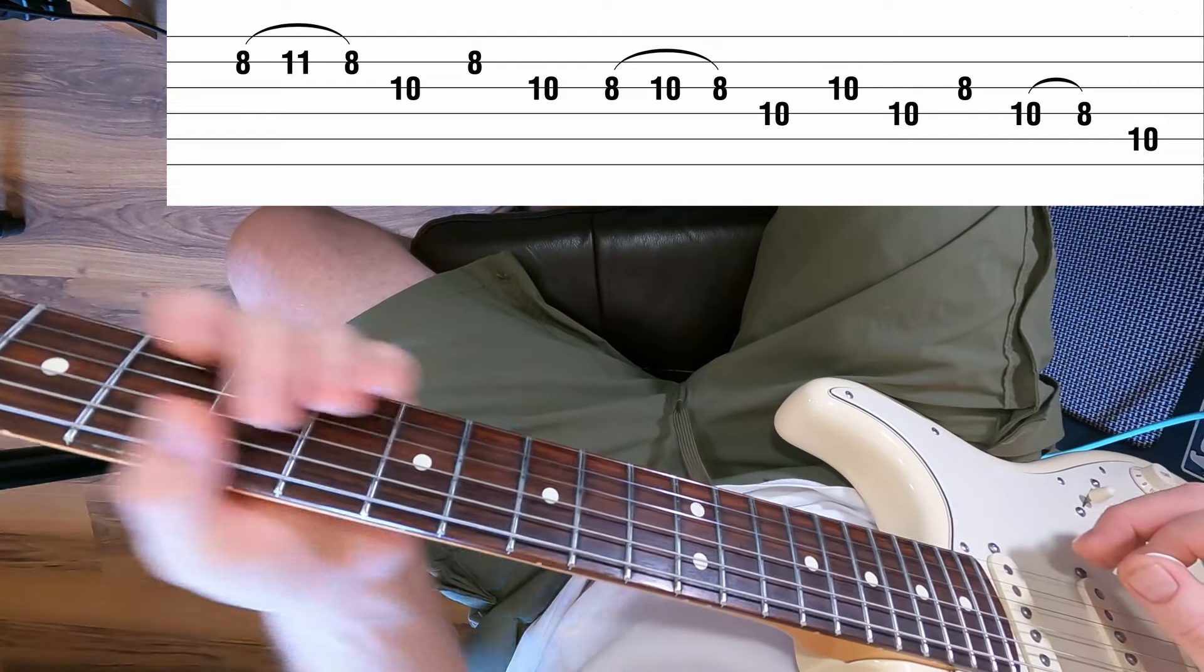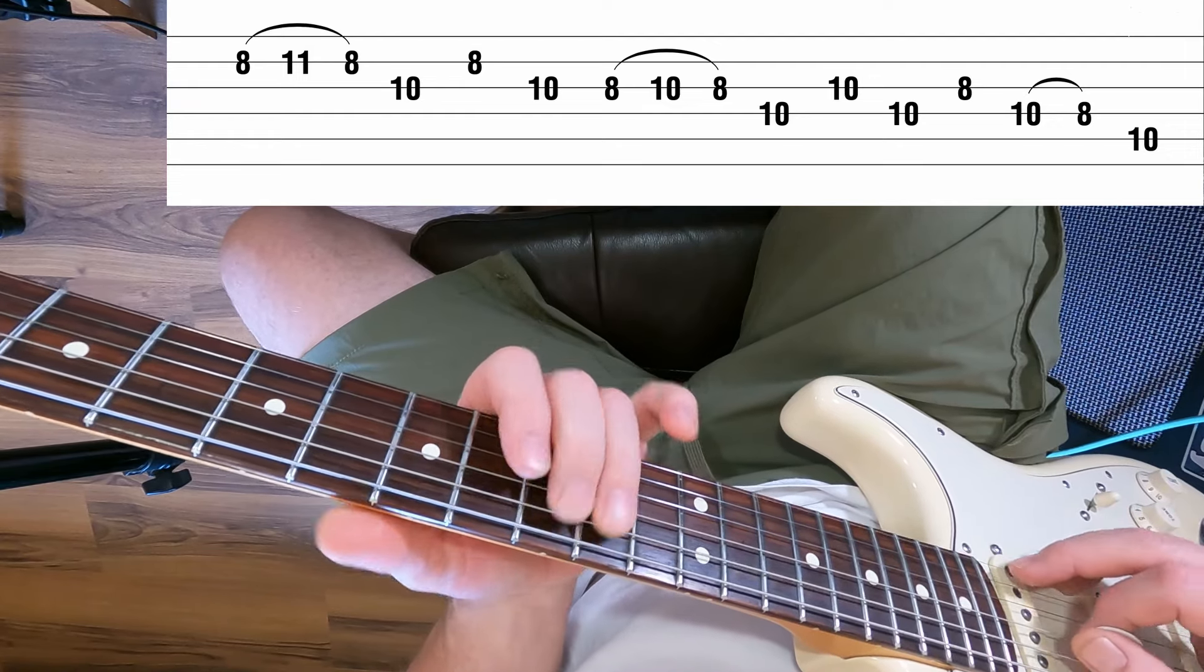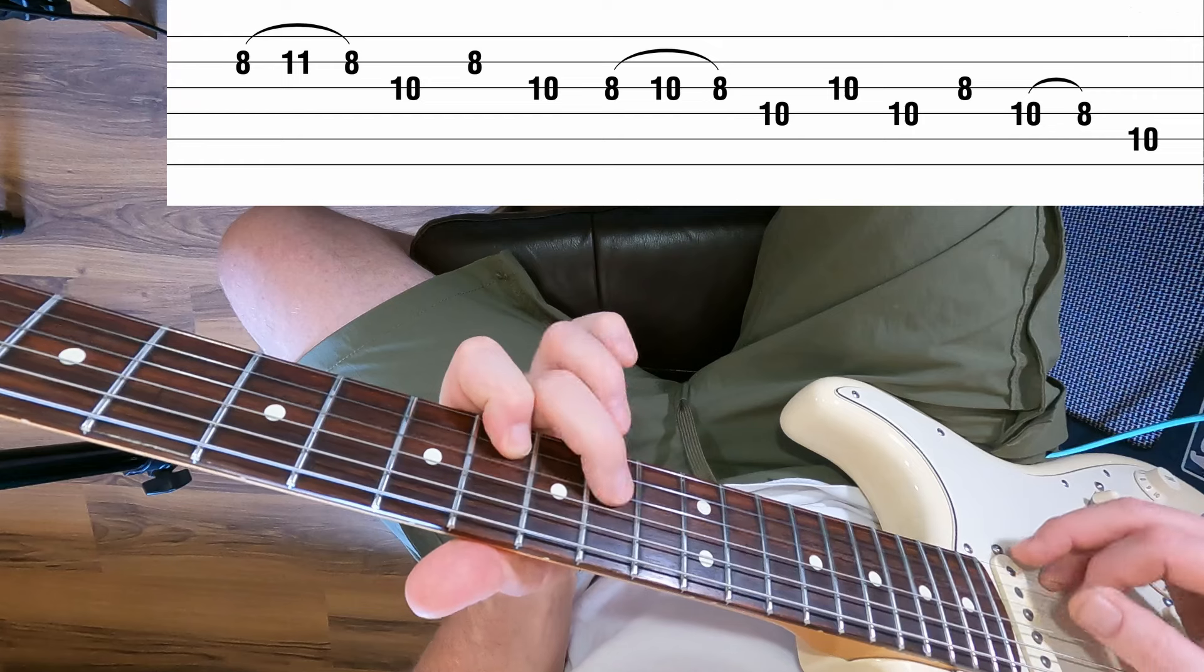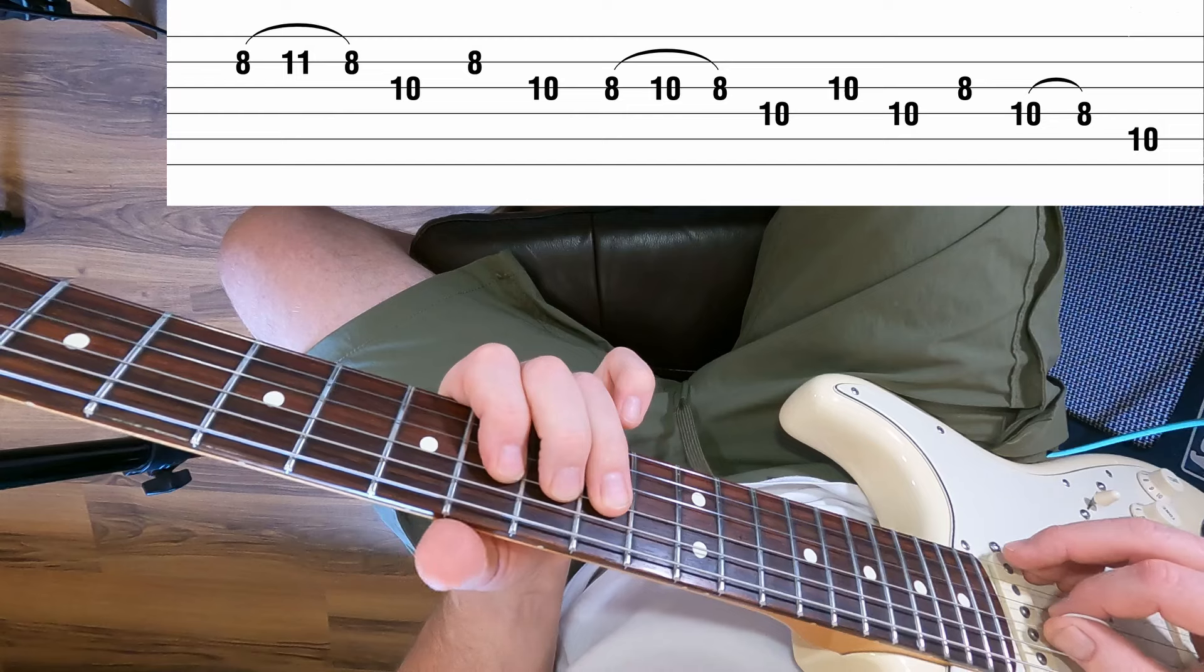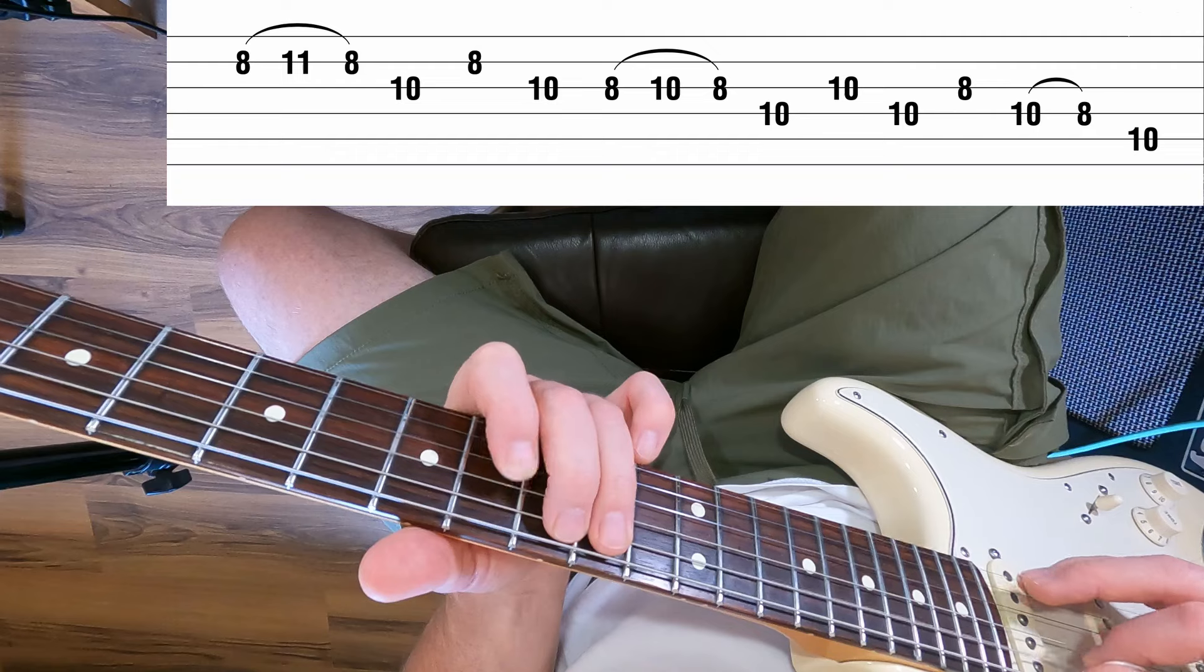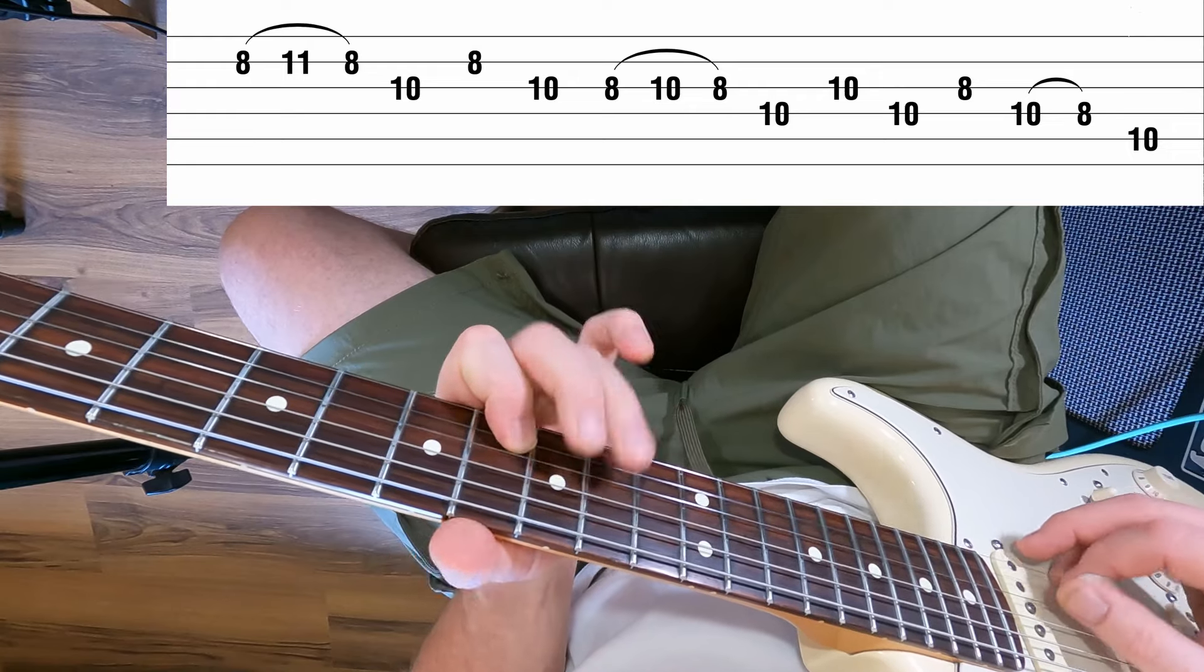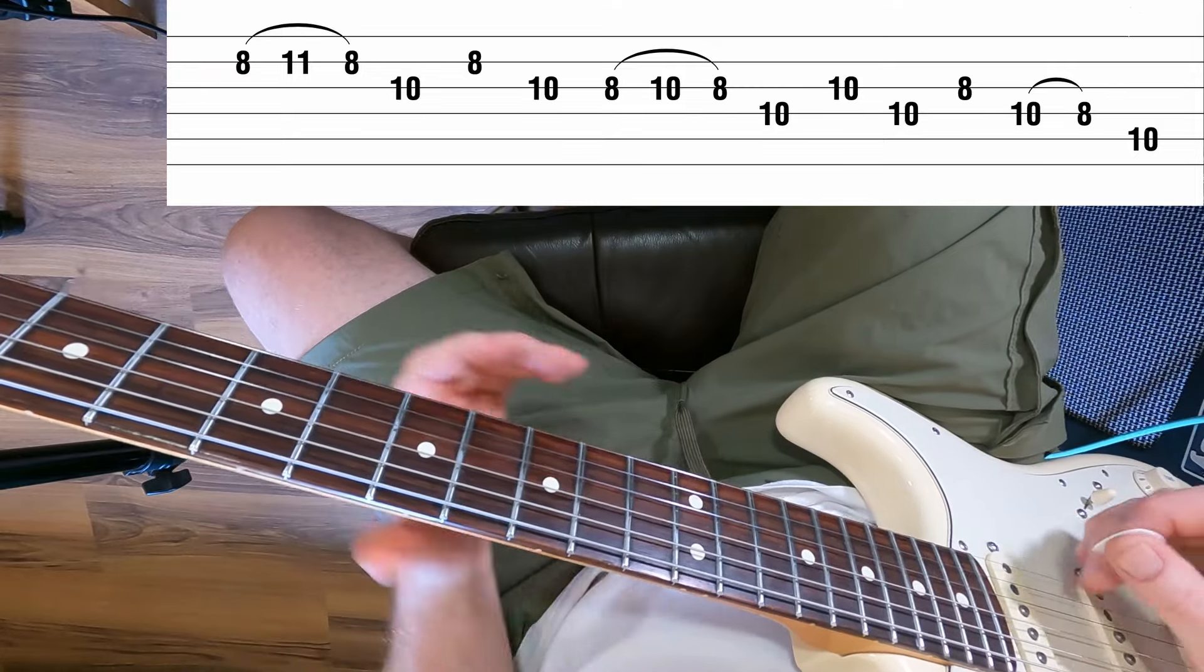There's one economy pick you can put in. On the last note, when you've done the pull-off from the 10 to 8 on the D, that's an up pick on that D string pull-off, so you can grab the root on the A string with another up pick. That's the only time we could do an economy pick. You don't have to, but I would do an economy pick. It just makes sense.